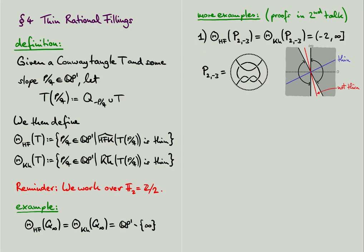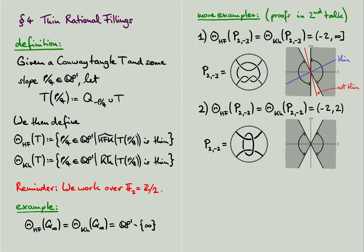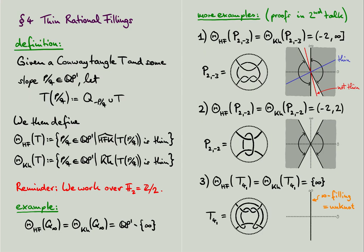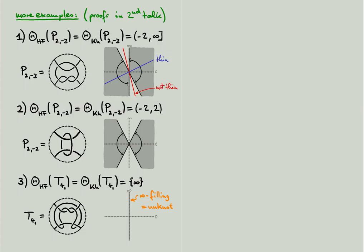The space of thin fillings can also be an open interval, as this example here illustrates. Again, this does not depend on the link homology theory. This holds for both Khovanov and knot-Floer homology. Finally, here is an example which exhibits a very different behavior. The tangle is the quotient of a strong inversion on the figure 8 knot, and for this tangle the space of thin fillings is just a single point. But again, the space seems to be independent of which homology theory you use.